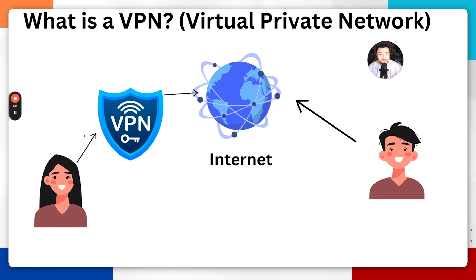There are other reasons somebody might want a VPN — it might be to access your home network remotely. A VPN can allow you to work from your home network from anywhere in the world. For example, if you're traveling abroad and you want to access files stored on a device at home, or local resources like security cameras on your home network, a VPN allows you to securely connect to your home network just as if you were sitting right at home.